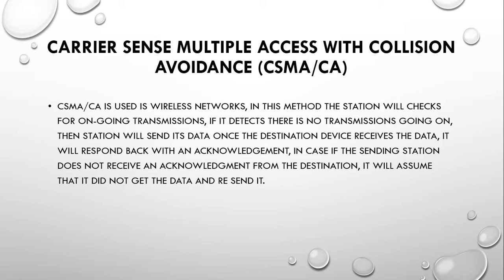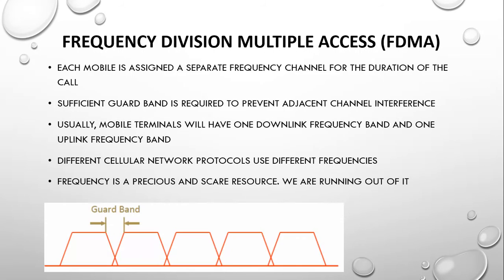Frequency division multiple access (FDMA) assigns each mobile device a separate frequency channel for the duration of the call. A sufficient guard band is required to prevent adjacent channel interference. Mobile terminals typically have one downlink and one uplink frequency band. Frequency is a precious and scarce resource.